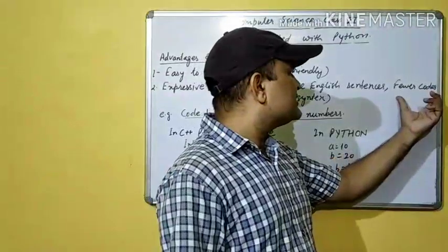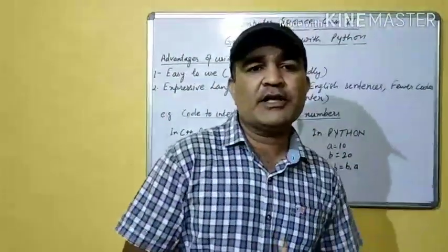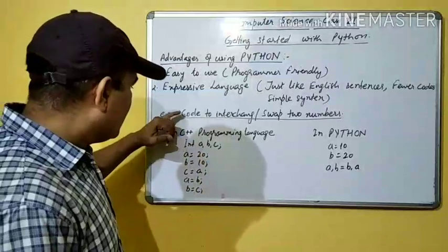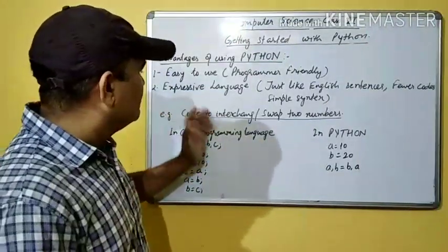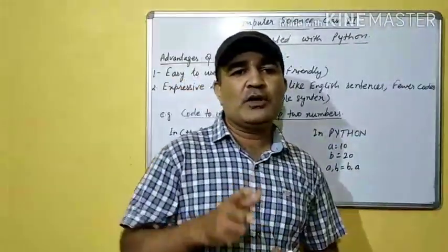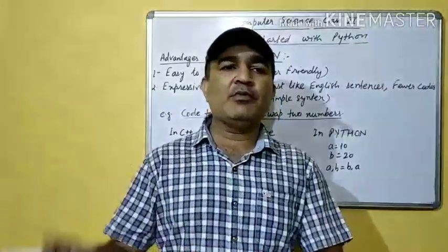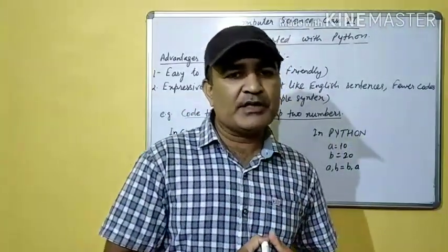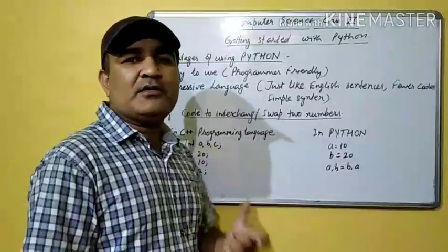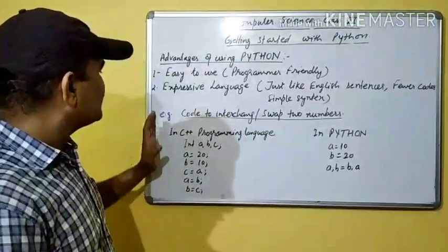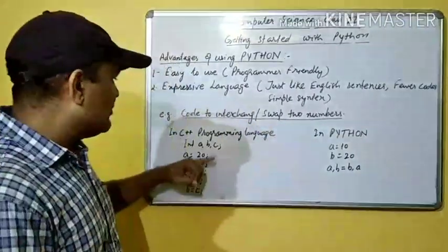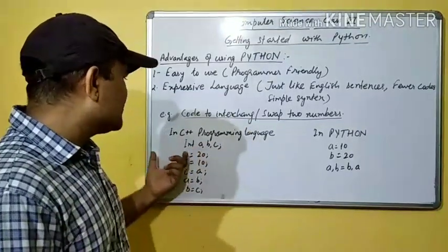Fewer codes means less to write. For example, consider swapping two numbers — we need to interchange the first number and the other number. To do this in a program written in C++, an object-oriented programming language, we first have to initialize three memory locations.